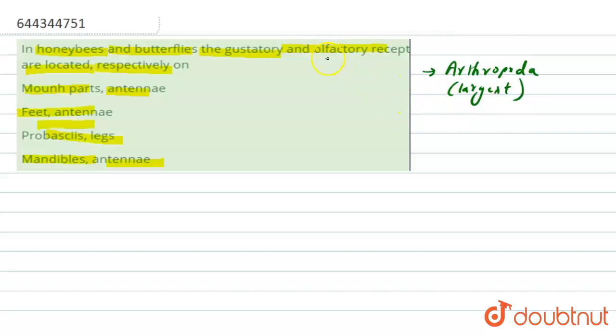Olfactory receptors are for smell and gustatory receptors are for taste in these organisms. During the process of pollination...